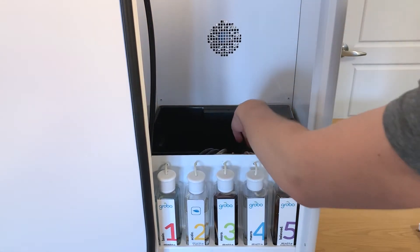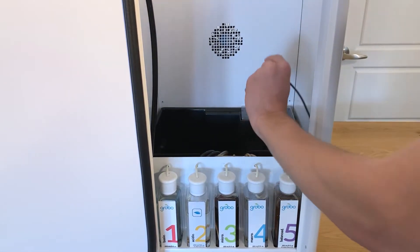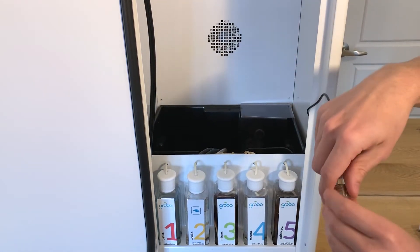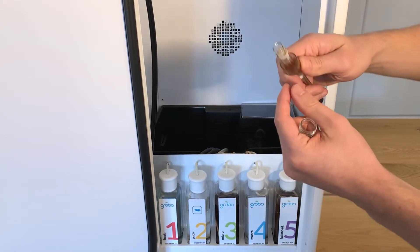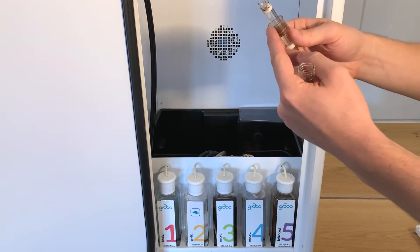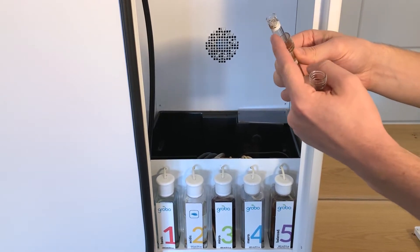Next, you're going to pick up the pH sensor. Now there are two different sensors in your Grobo. The one that you're looking for has a crown-like shape with some holes at the end of it. This is your pH sensor.